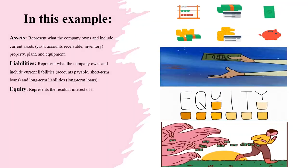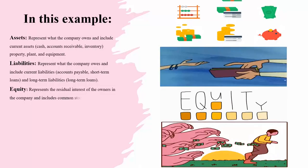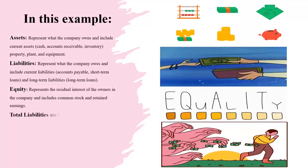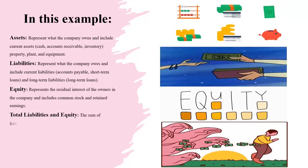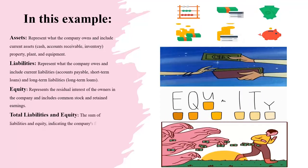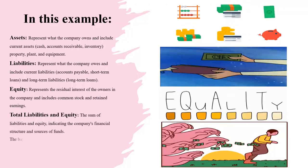Equity represents the residual interest of the owners in the company and includes common stock and retained earnings. Total liabilities and equity. The sum of liabilities and equity indicating the company's financial structure and sources of funds.